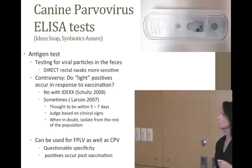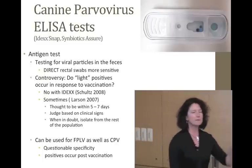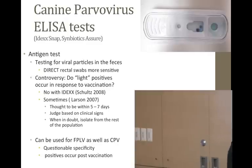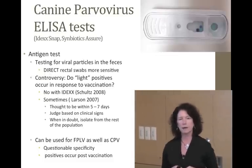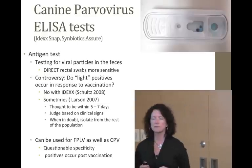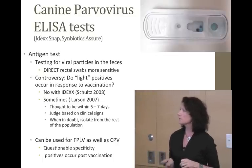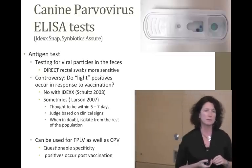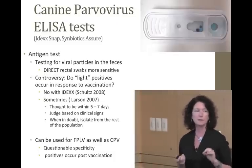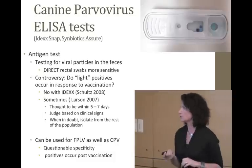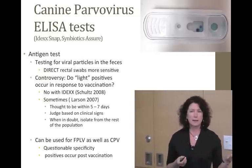The canine parvovirus ELISA antigen test looks for viral particles in feces. Direct rectal swabs are more sensitive than swabbing a fecal pile — it's better to get a sample directly from the animal. A controversial question: do light positives occur in response to vaccination? Schultz's 2008 study with IDEXX in approximately 64 dogs says no — if you get a positive it is truly positive. However, a 2007 study by Larson found that sometimes you do get false positives depending on which test you're using, with IDEXX possibly being slightly better at avoiding false positives post-vaccination.